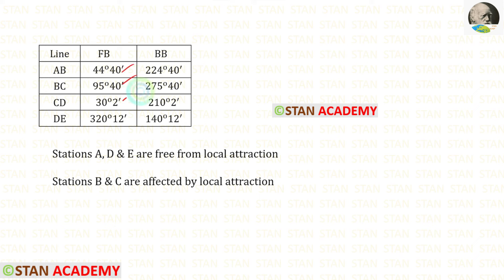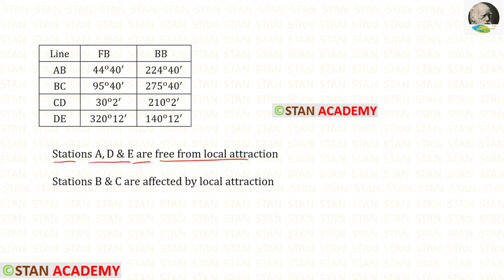Here I have rearranged the table with the corrected readings. We know that stations A, D, and E are free from local attraction, and stations B and C are affected by local attraction. Now we are going to end this session. Thank you for watching this video.